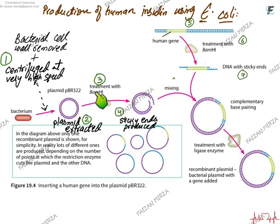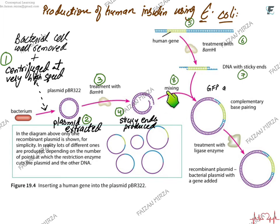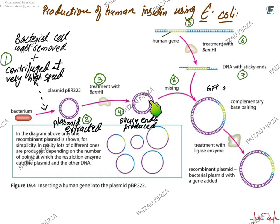The extracted PBR322 plasmid is cut using the restriction enzyme BamH1. When cut, it produces sticky ends. The human insulin gene is also cut using the same BamH1 restriction enzyme — it must be the same enzyme for both, so they have complementary sticky ends. These are the sticky ends of the human insulin gene and the sticky ends of the PBR322 plasmid. When mixed together, complementary base pairing occurs and the plasmid closes up with the inserted gene.